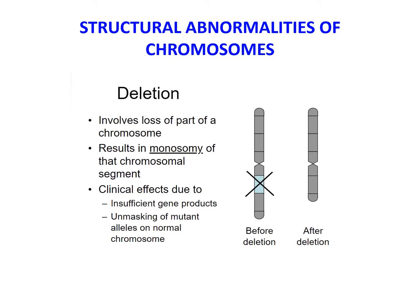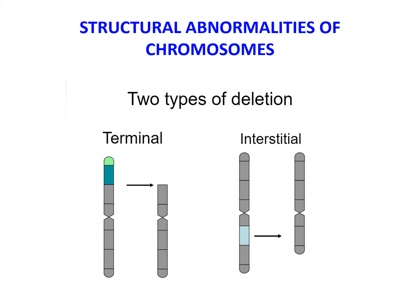Deletion refers to loss of a portion of a chromosome, resulting in monosomy of that chromosomal segment. The clinical effects are usually due to insufficient gene product or unmasking of mutant alleles on normal chromosomes. There are two types of deletions: terminal and interstitial. Most deletions are interstitial. Interstitial deletions occur when there are two breaks within a chromosome arm followed by loss of the chromosomal material between the breaks and fusion of the broken ends. Terminal deletions result from a single break in a chromosome arm, producing a fragment with no centromere, which is then lost at the next cell division. The deleted end of the retained chromosome is protected by acquiring telomeric sequences.